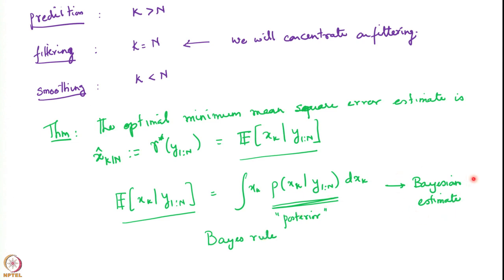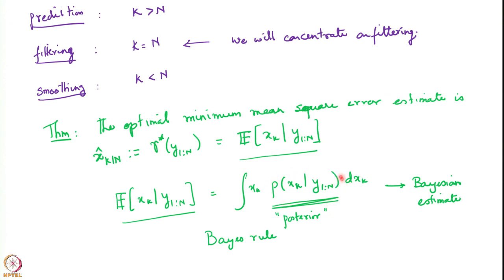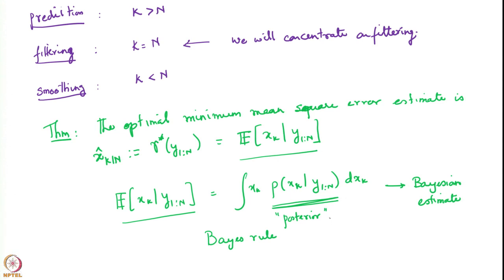What we are doing here is applying Bayes rule to compute this particular quantity. The trick, however, is that this is not just a one-time application of Bayes rule — we need to do this recursively. As a result, all our challenges are about computing the posterior in a recursive manner. The problem is about computing the posterior recursively, and the hardness lies in computing the posterior distribution recursively using the previous posterior distribution, which is itself conditioned on the previous information.